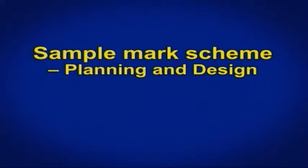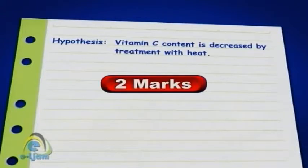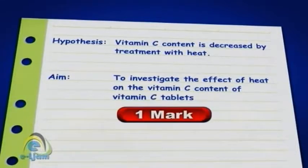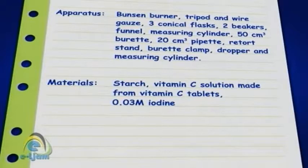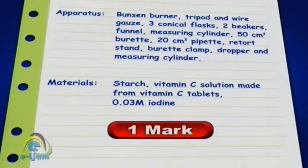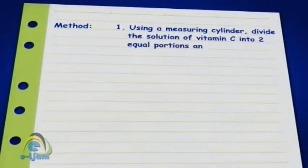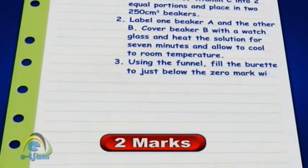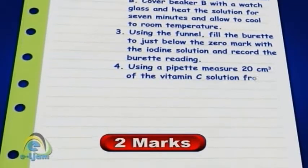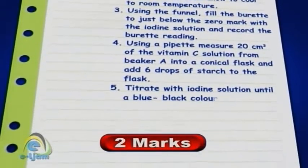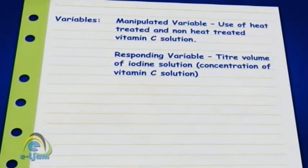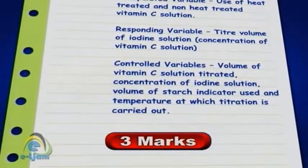Here is a sample mark scheme for planning and designing. Clearly stated hypothesis that is testable: 2 marks. Aim relevant to the problem: 1 mark. Apparatus and materials listed are appropriate to the method: 1 mark. Steps are written in numbered steps, logically sequenced using standard English and in the present tense: 2 marks. Method chosen should be able to test hypothesis and fulfill aim: 2 marks. Clear treatment of variables — manipulated, controlled, and responding: 3 marks.